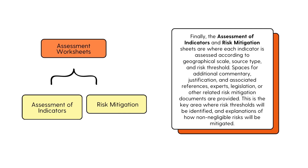Finally, the Assessment Worksheets. The Assessment of Indicators and Risk Mitigation Sheets are where each indicator is assessed according to geographical scale, source type, and risk threshold. Spaces for additional commentary, justification, and associated references, experts, or legislation are also provided, as well as space to mark any documents related to risk mitigation measures. This is the key area where risk thresholds will be identified and explanations of how non-negligible risks will be mitigated.